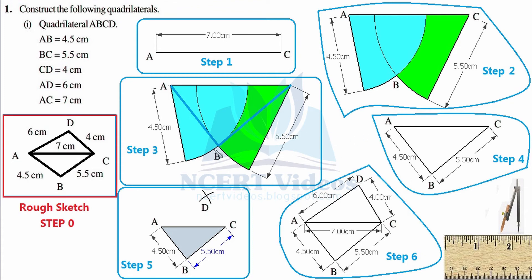In Step 3, join point B to both A and C using a ruler. In Step 4, erase all arcs and leave only the line segments — we have now constructed the lower triangle of the quadrilateral. For the upper triangle, adjust your compasses to 6 cm, place the needle at A, and draw an arc. Then adjust to 4 cm, place the needle at C, and draw another arc crossing the previous one. Their intersection gives us point D.